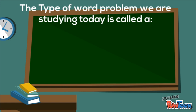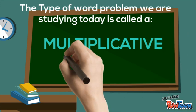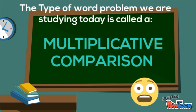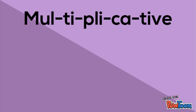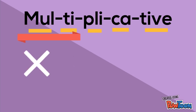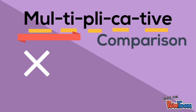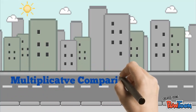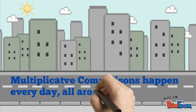The type of word problem we are studying today is called a multiplicative comparison. Yikes! Let's try that one more time: multiplicative. Multi-pli-ca-tive. Multi for multi, like multiplication, and comparison for comparing two things that are different. Multiplicative comparisons happen every day all around you.